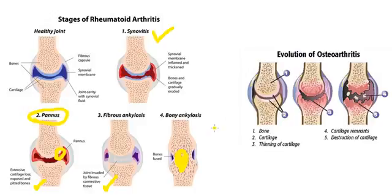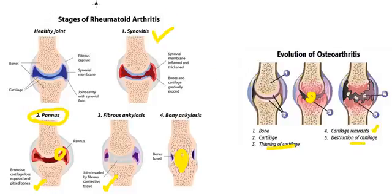In the evolution of osteoarthritis: starting with normal bone and cartilage, there is thinning of cartilage, followed by cartilage remnants, then destruction of cartilage, ultimately leading to bony changes in the joint.